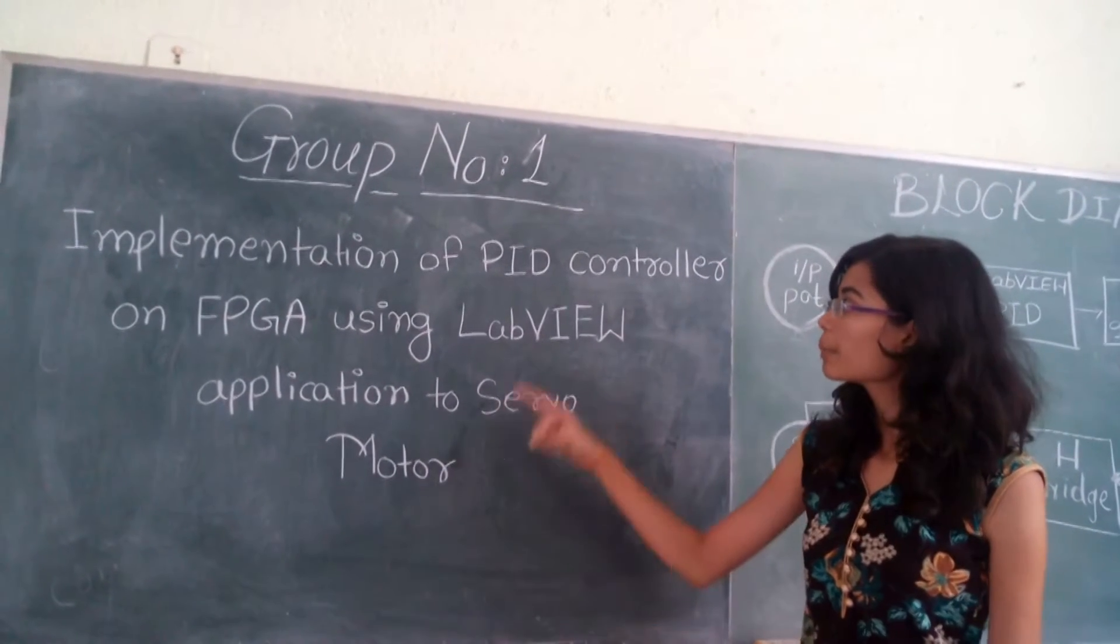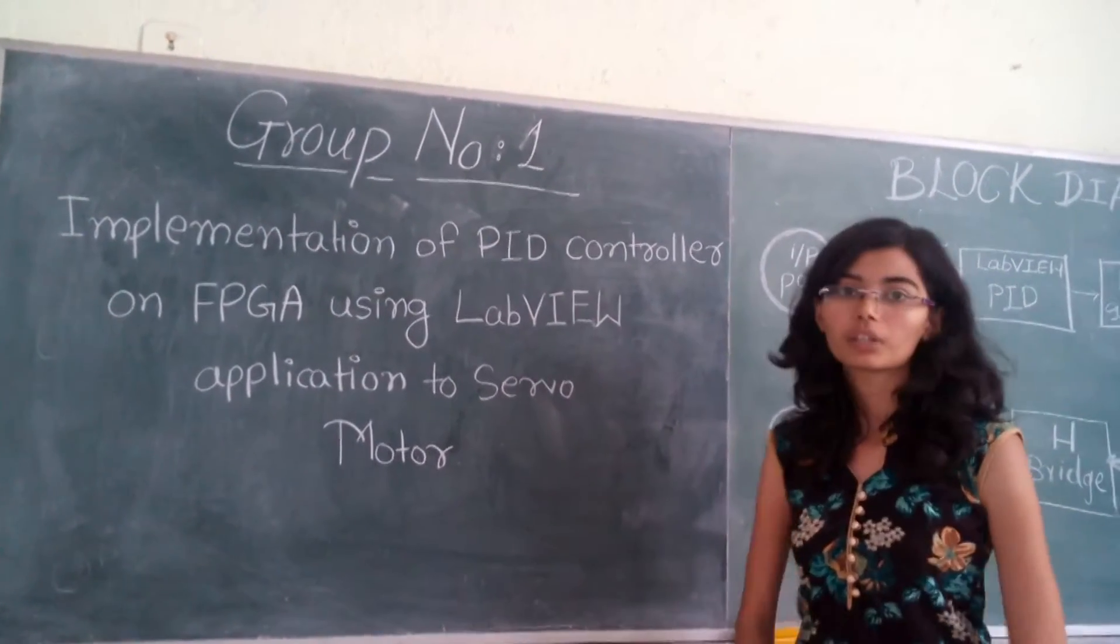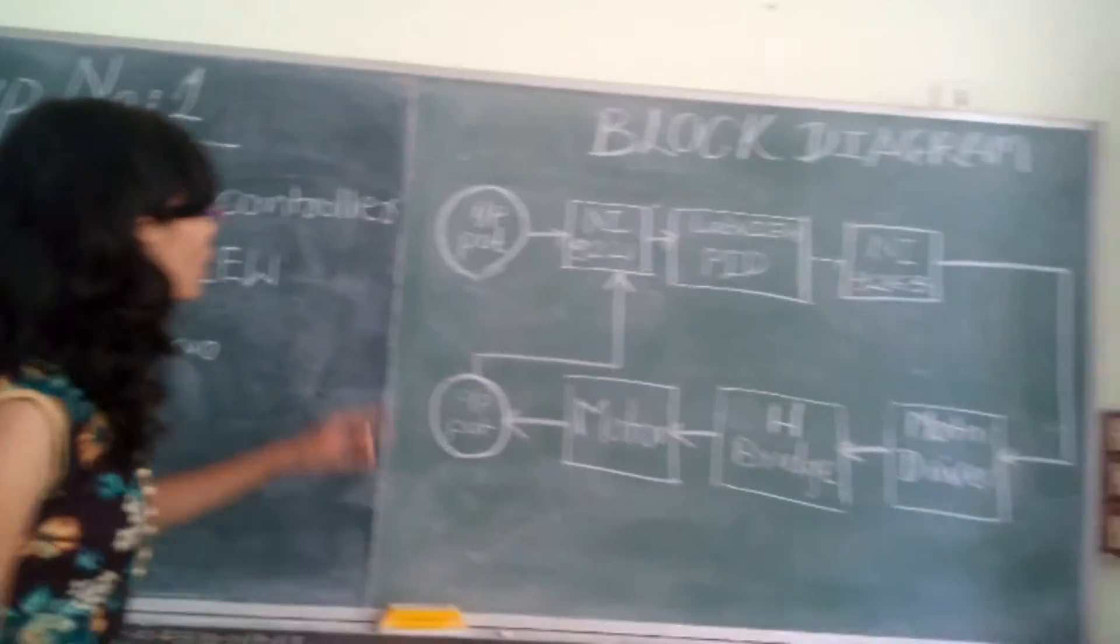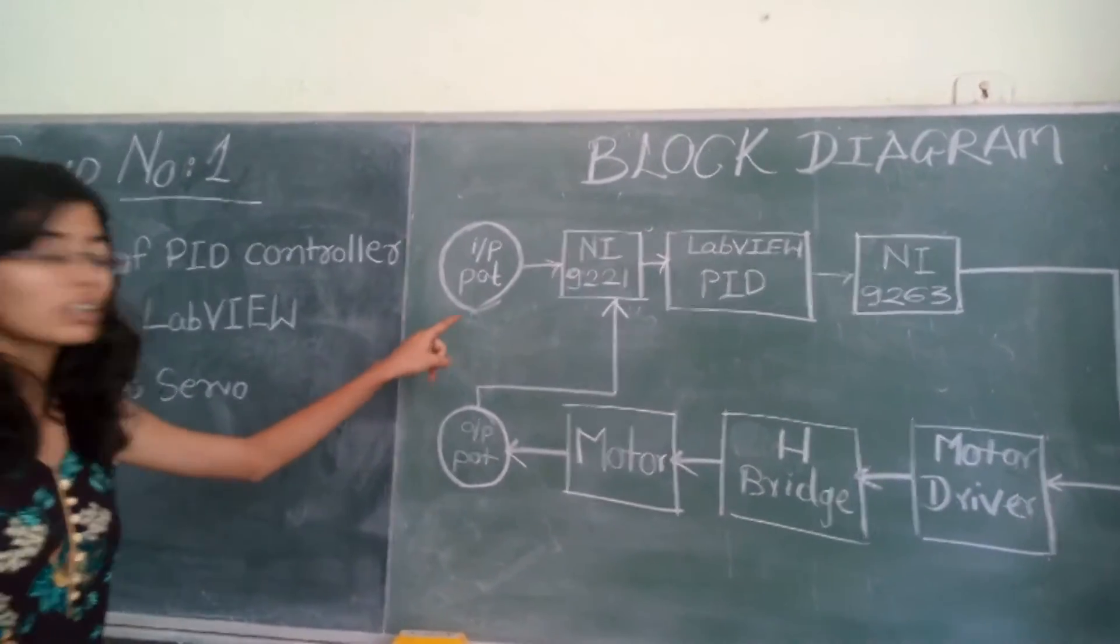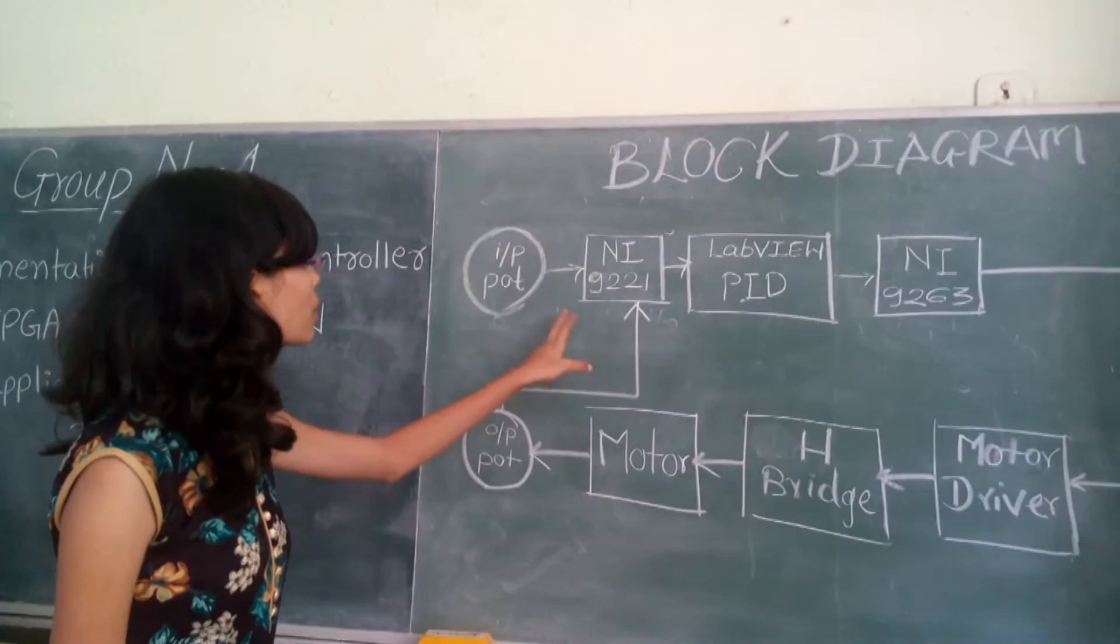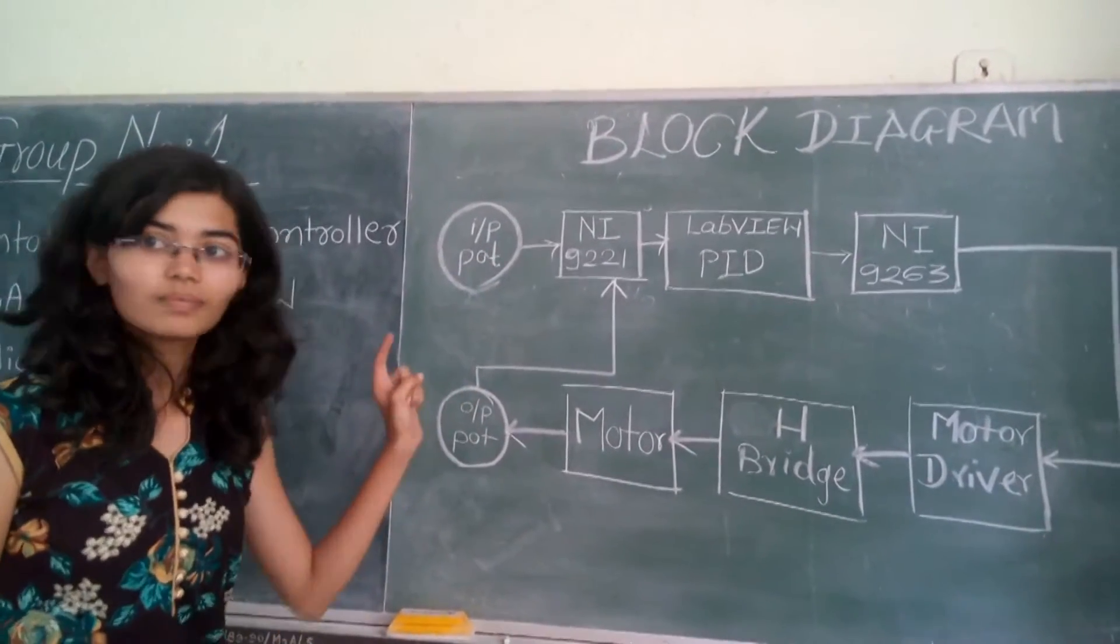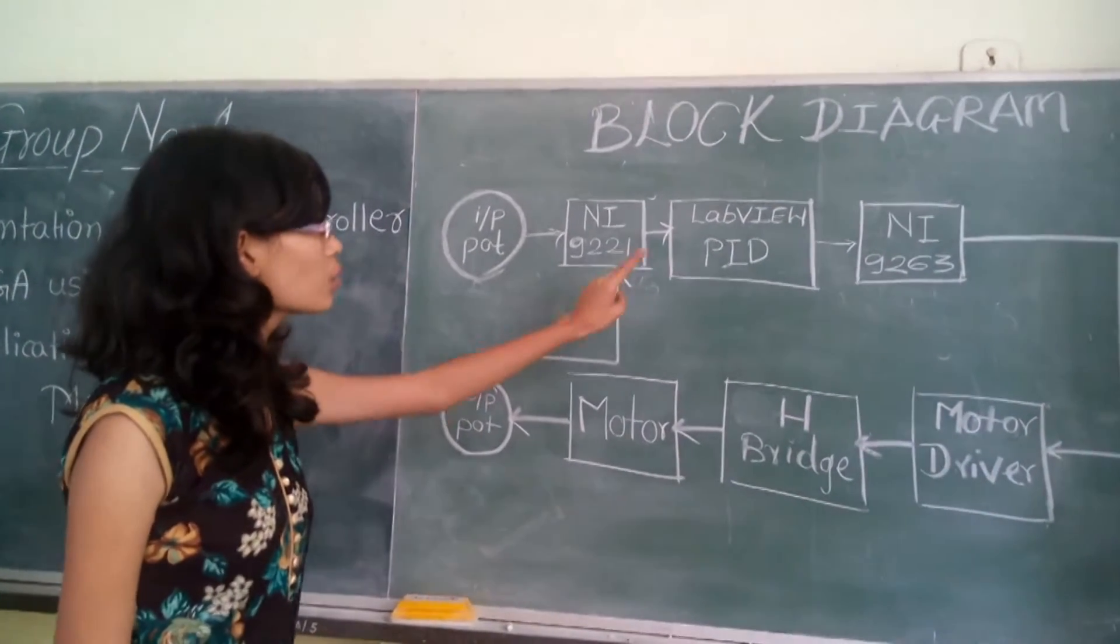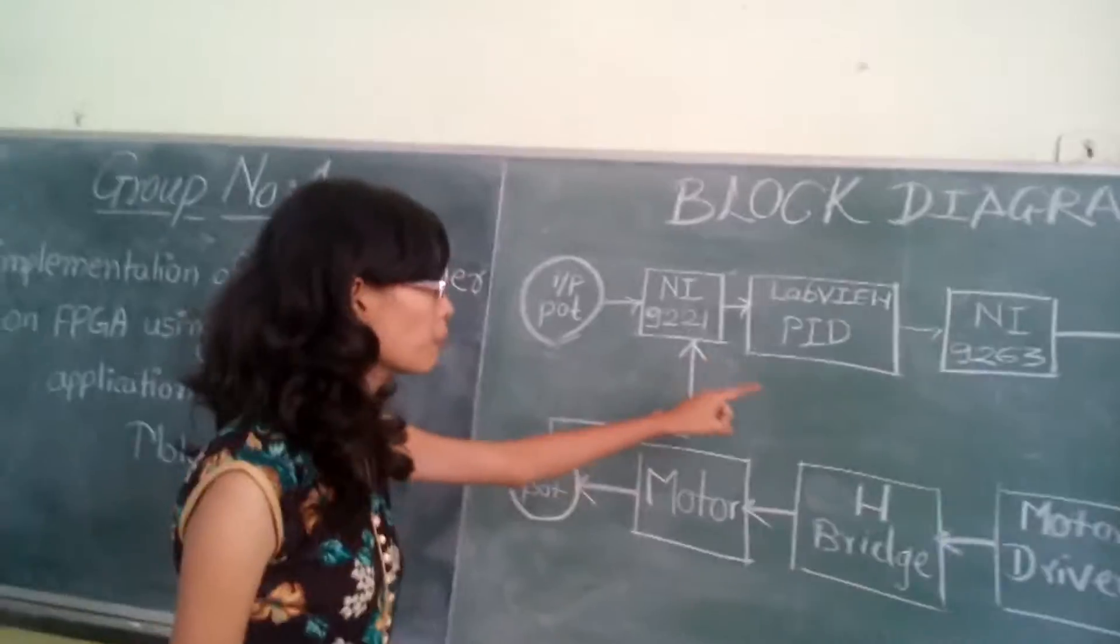Name of our project is Implementation of PI controller on FPGA using LabVIEW application to servo motor. Now, our block diagram is here. We have connected the input port which is used as set point. Then the input port is given to the analog input and it is connected to the LabVIEW where we have implemented the PI controller in FPGA.